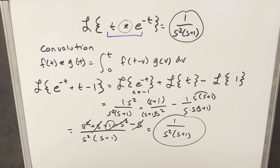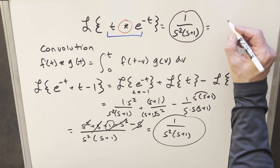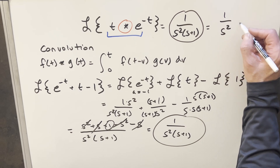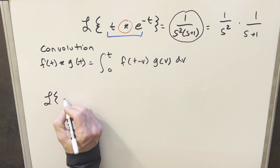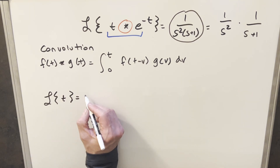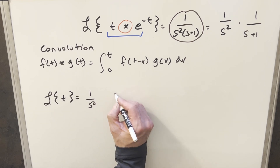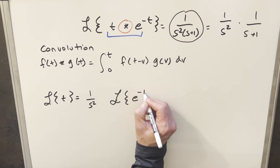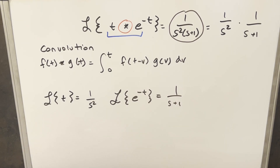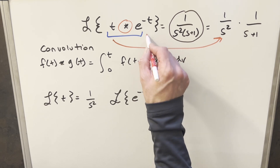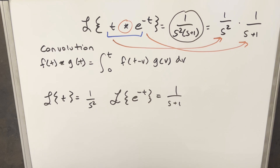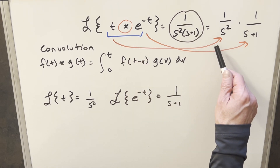We have our solution to this Laplace transform. Looking at it more carefully, I can rewrite it as 1 over s squared times 1 over s plus 1. That rewrite seems pointless, but notice: the Laplace transform of t is 1 over s squared, and the Laplace transform of e to the minus t is 1 over s plus 1. So in our solution, the Laplace transform of the first piece is right there, multiplied by the Laplace transform of the second piece. It turns out we have a nice formula: the Laplace transform of the convolution equals the product of the individual Laplace transforms.